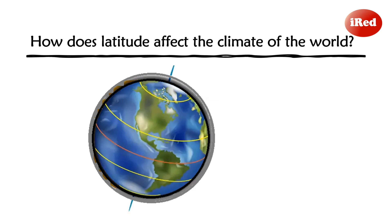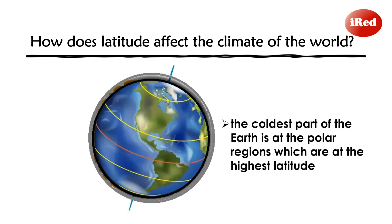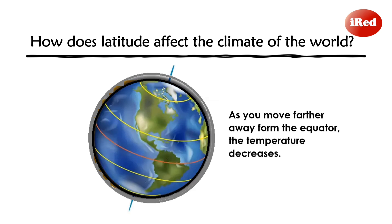Have you noticed how latitude affects the climate of the world? Yes, the hottest part of the Earth is along the equator, which is at the zero-degree latitude, and the coldest part is at the polar regions, which are at the highest latitude. As you move farther away from the equator, the temperature decreases.